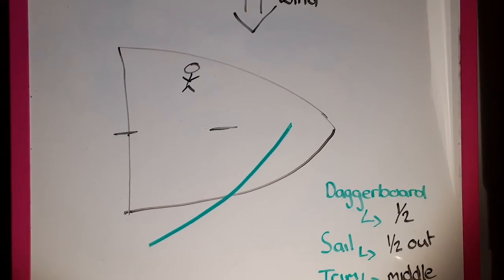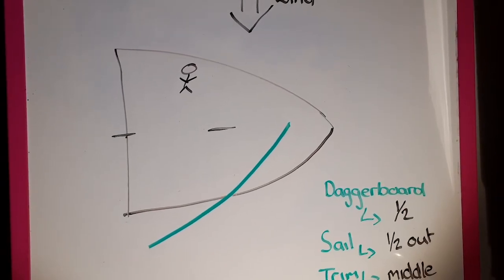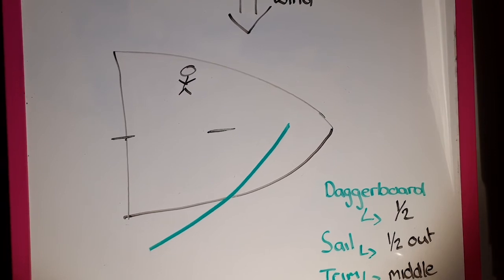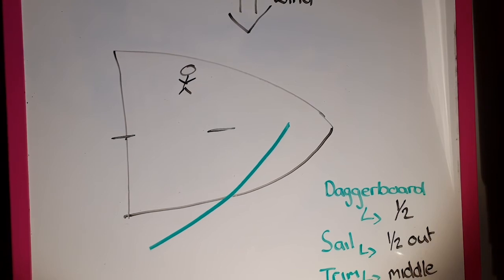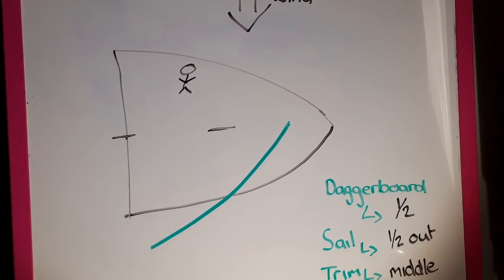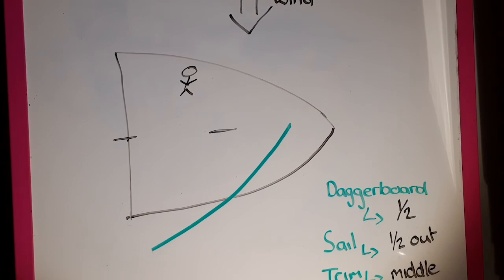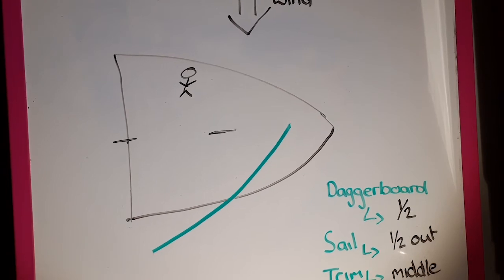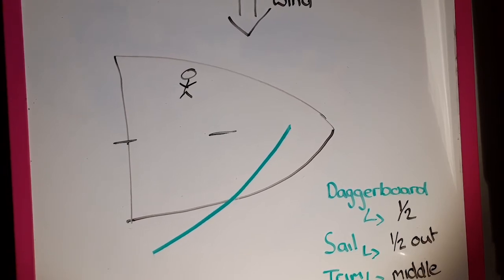In this diagram, we're sailing on a beam reach. The wind is coming from the top of the board there and the boat's going perpendicular to the wind. For this point of sailing, you want the sail to be about halfway out and you want your outhaul, kicker, and downhaul to be sort of a medium tension, not as tight as you can get it but not loose.